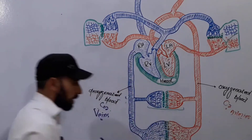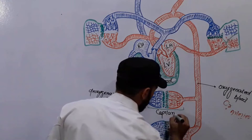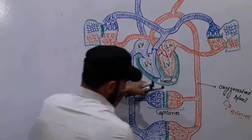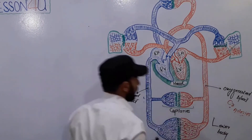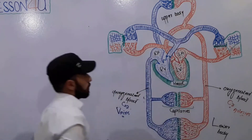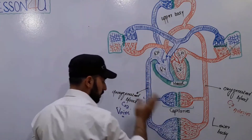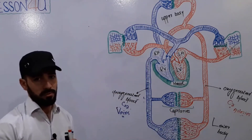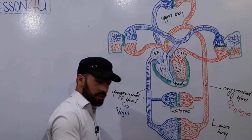This area represents the area for exchange of different materials, and it comprises of capillaries. This area represents our lower body, and this area represents our upper body. The capillaries are the areas for the exchange of pure and impure substances — nutrients and other components. We can say these capillaries are present in the tissues.